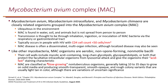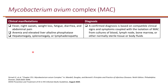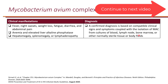Symptoms of MAC include fever, night sweats, weight loss, fatigue, diarrhea, and abdominal pain — many of which overlap with tuberculosis symptoms — as well as anemia and elevated liver alkaline phosphatase. For diagnosis, a confirmed diagnosis is based on compatible clinical signs and symptoms, as well as isolation of MAC from culture of blood, lymph node, bone marrow, or other normally sterile tissue or body fluids.